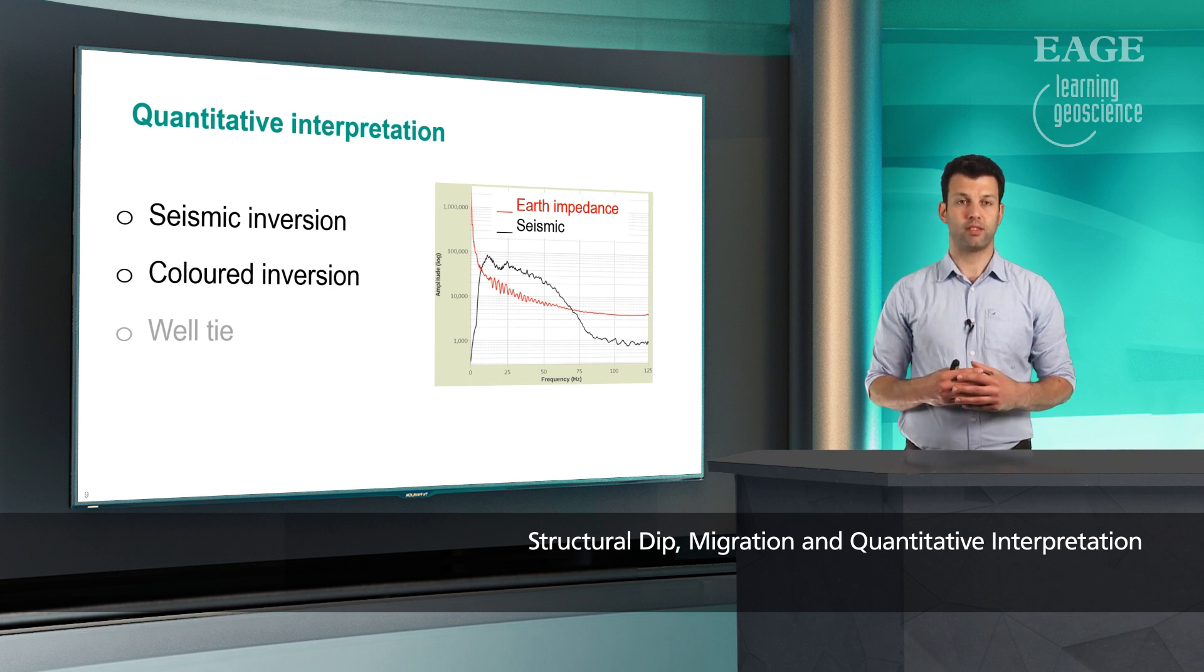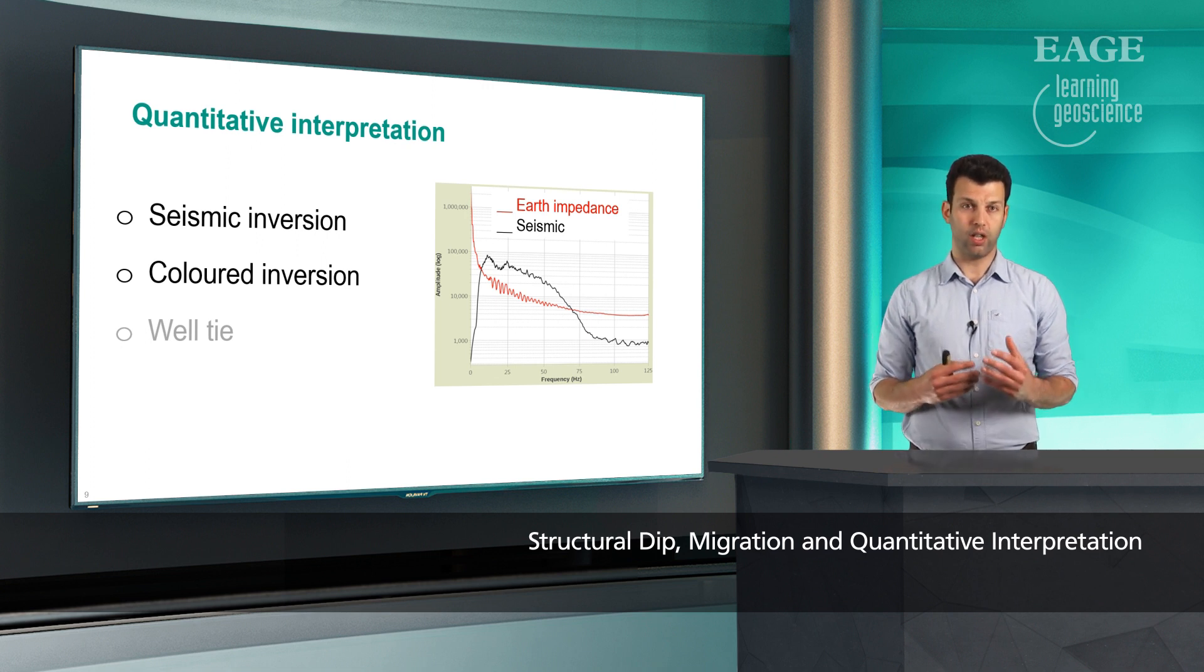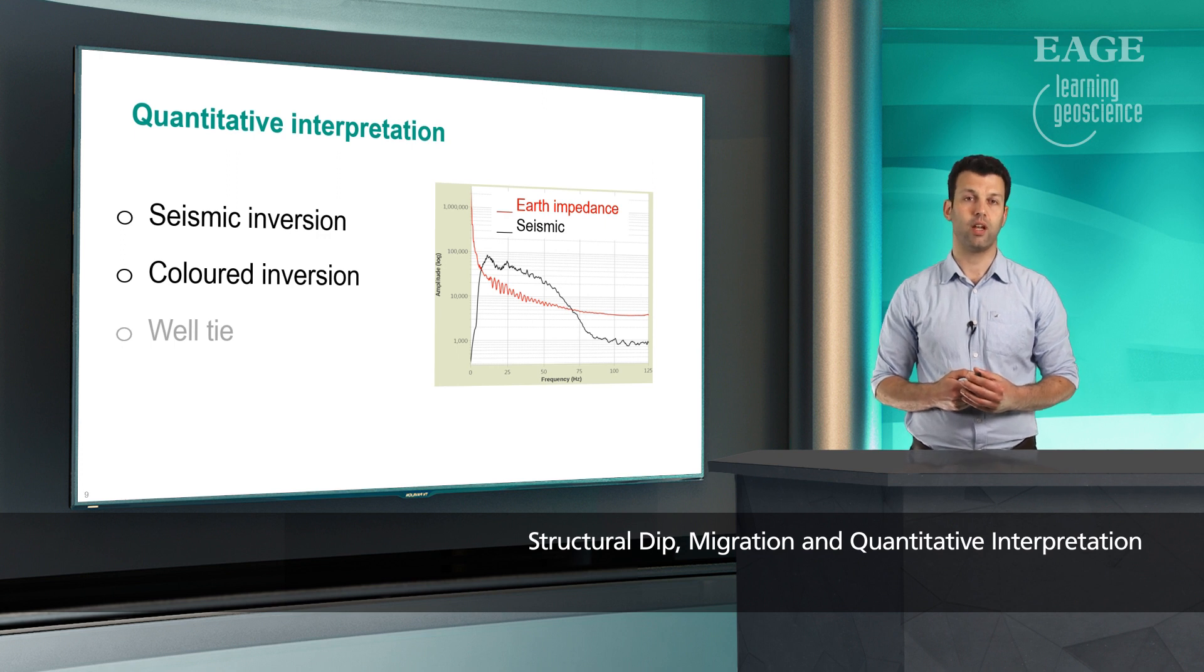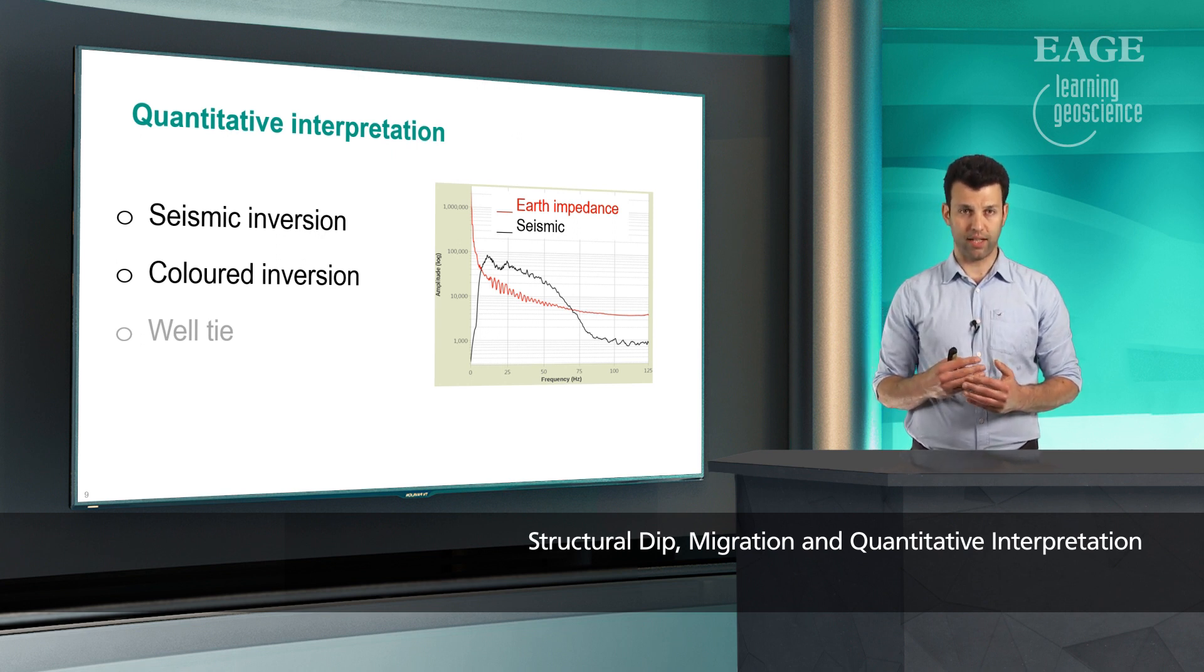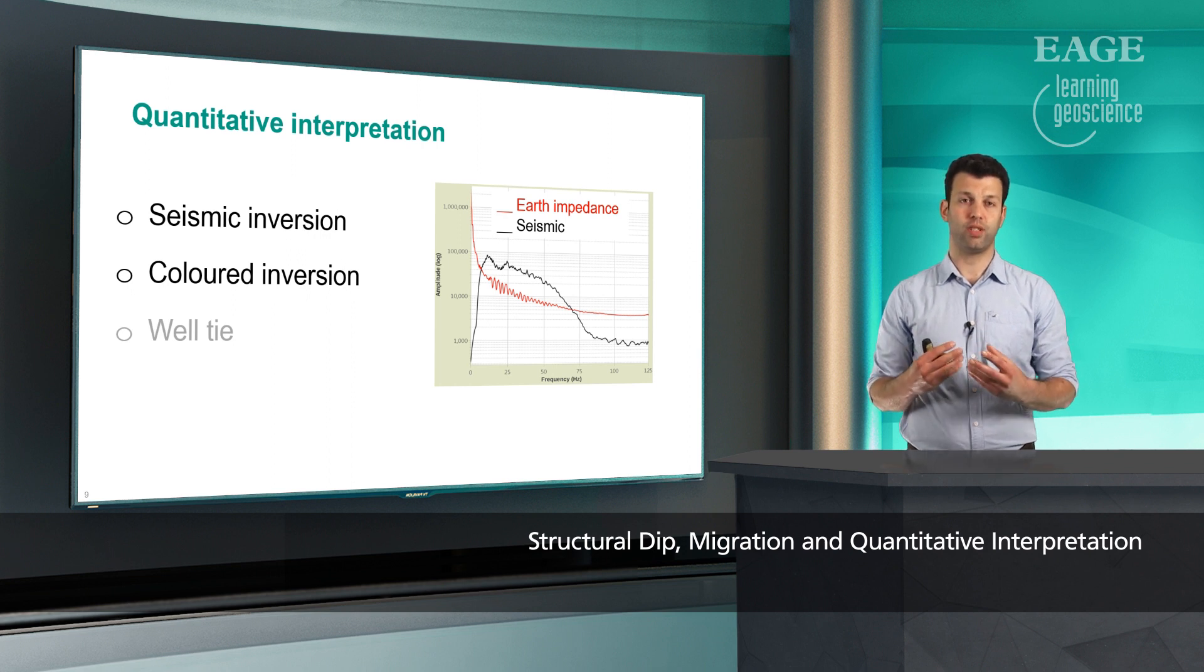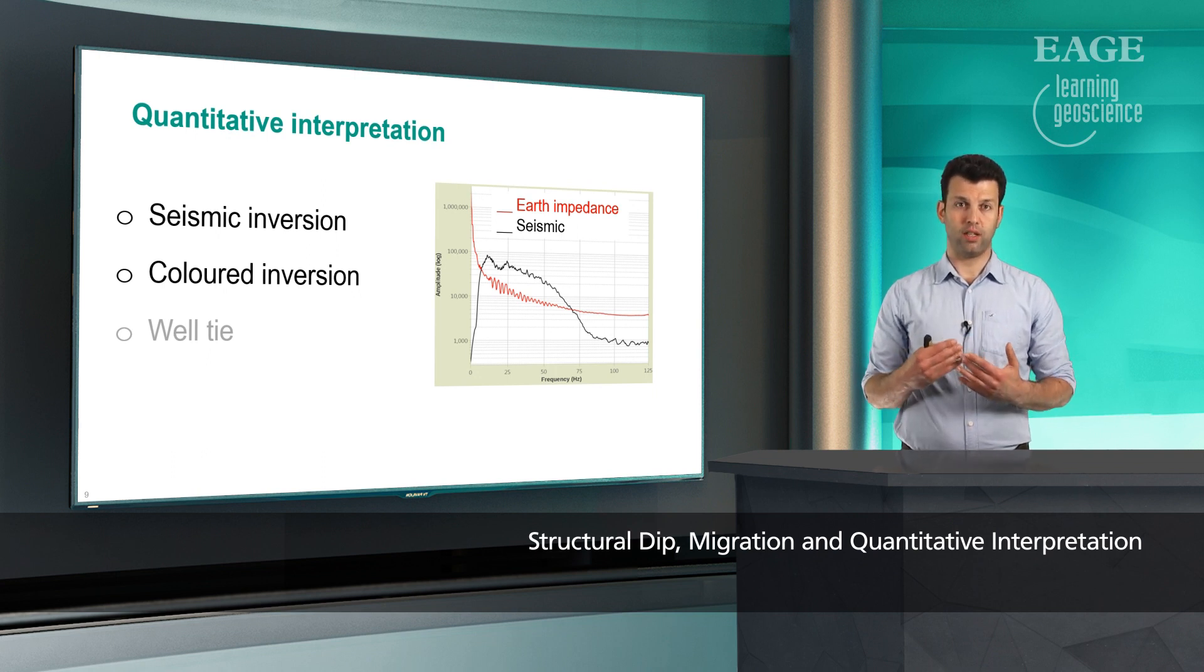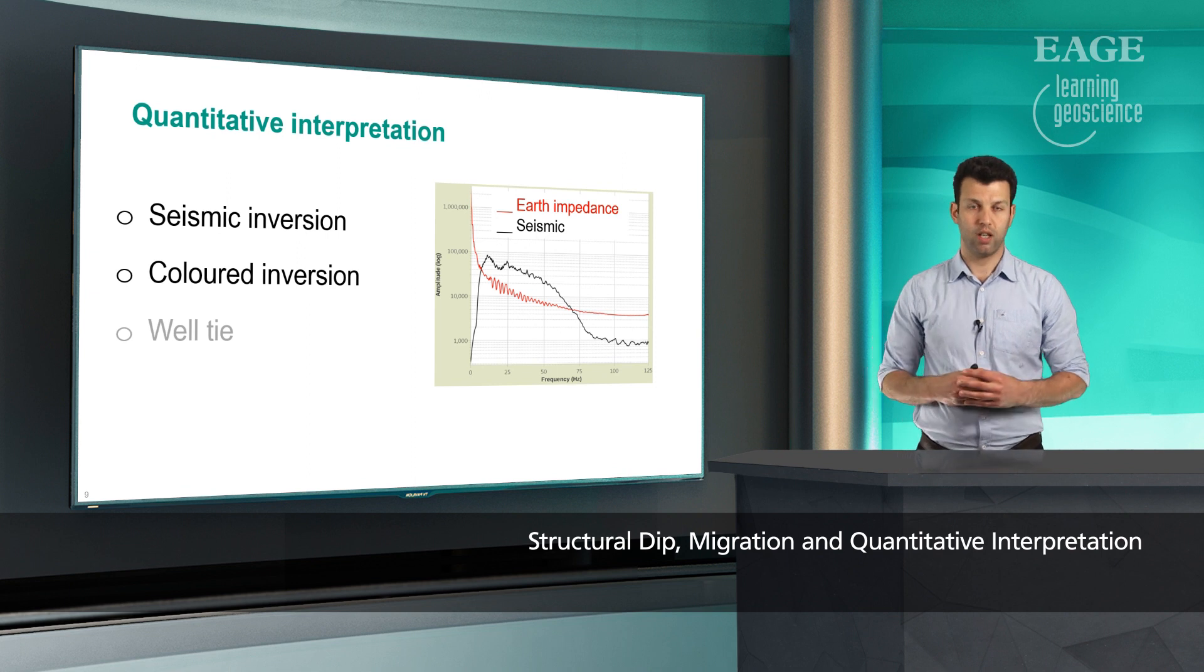Colored inversion is slightly different. In colored inversion, we design an operator to match the seismic spectrum to that of Earth's spectrum, such as the one shown on the right hand side. However, in colored inversion, there is also a convolution included, and that is when the filter applies to the seismic image. That filter assumes horizontal layering. So if there is any effect on the seismic image, again, that spectral match which boosts the low frequencies would bias that further.